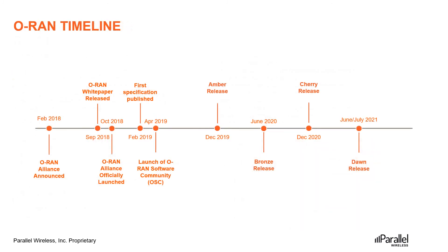The next release is planned for June or July of this year. We don't know much except that it is called the D-release or Don release. You may have noticed the pattern already that each release is following the alphabet sequence. Similarly, the release planned in December is known as the E-release at the moment, and it will be assigned a name after the D-release.